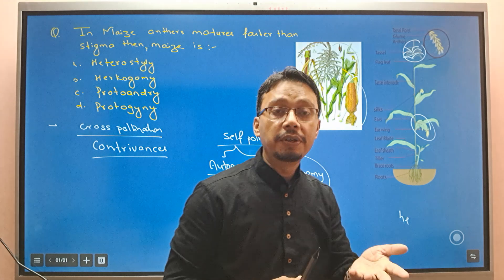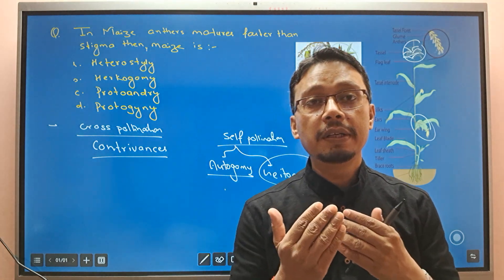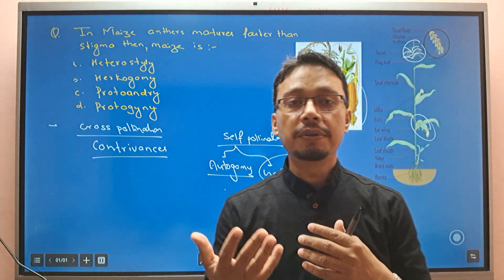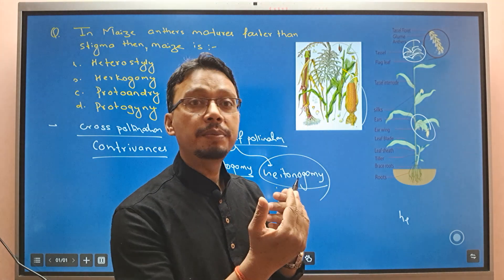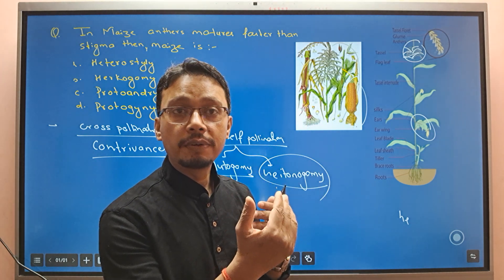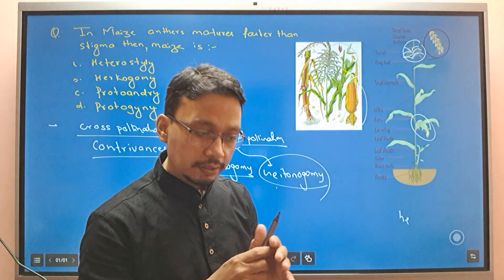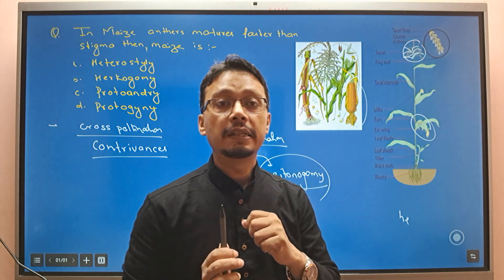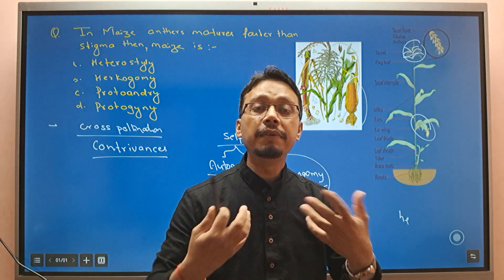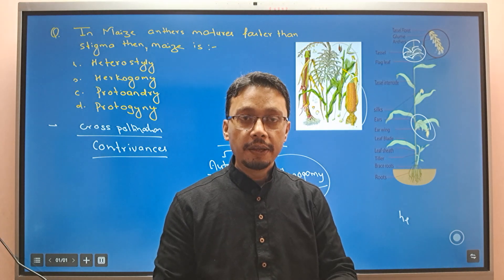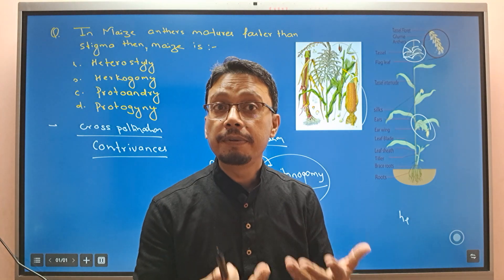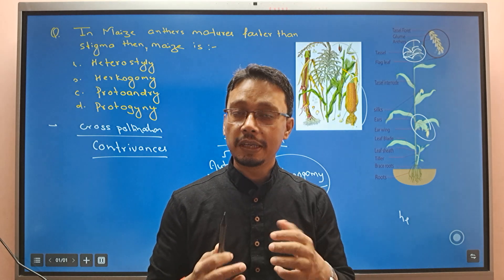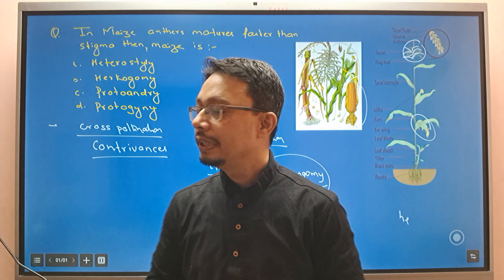Now we can find cross-pollination — cross-pollination between genetically different flowers. The species may be the same, but the plants are genetically different. So genetically different flowers are called cross-pollination.